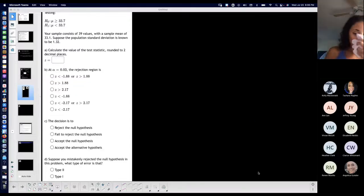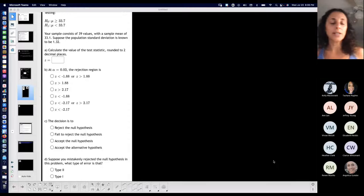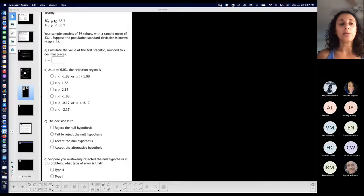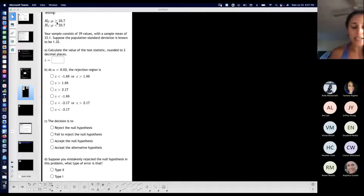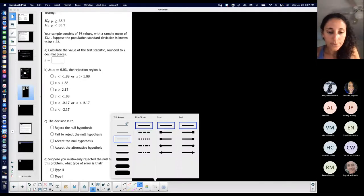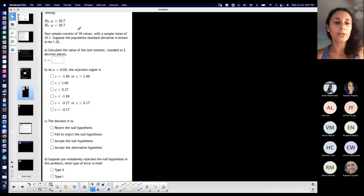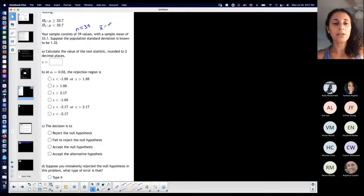The nice thing is they gave me the null and the alternative hypothesis. The alternative hypothesis is that a population mean for whatever is less than 33.7. So the claim is that the population mean is less than 33.7. Your sample consists of 39 values, so sample size n is 39 with a sample mean of 33.1. Suppose the population standard deviation is known, sigma is known to be 1.32.